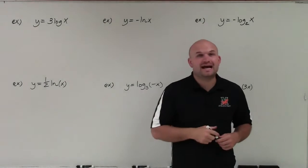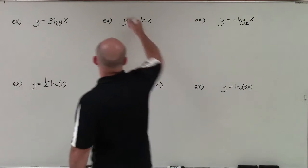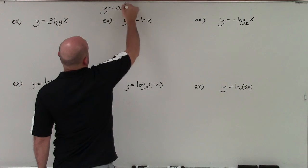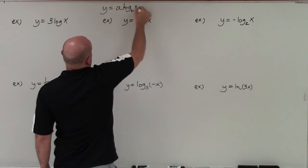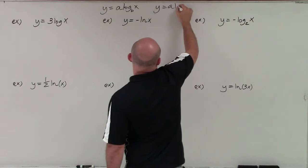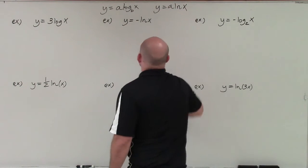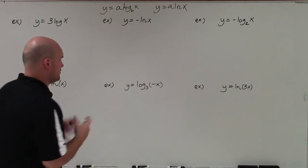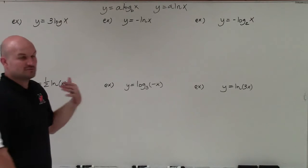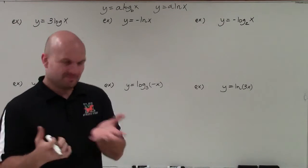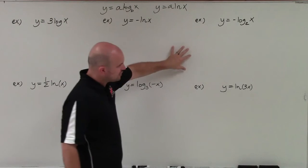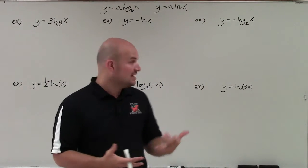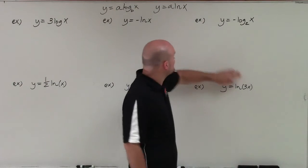Welcome, ladies and gentlemen. What I'd like to do is show you how to graph exponential equations when they're in the form of y equals a times log base b of x, as well as y equals a times ln of x. These are going to have some transformations — basically only reflections. But I want to talk about the basis of the logarithm graph and what the general parent graph looks like, because a lot of students get confused, especially once we start throwing numbers in different places.